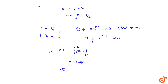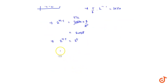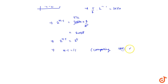This implies 2 to the power n minus 1 equals 2 to the power 11, which equals 2048. Comparing the exponents, we get n minus 1 equals 11, which implies n equals 12. This is our final answer.